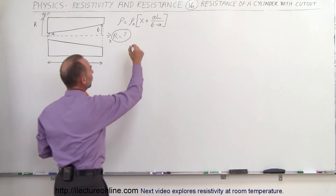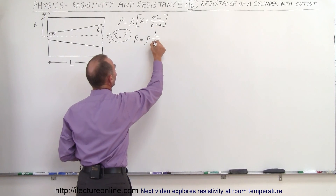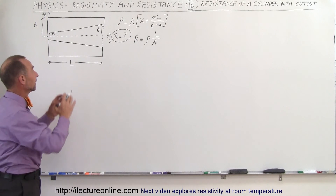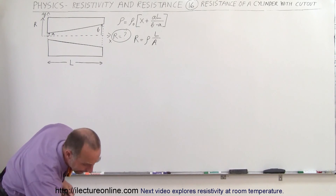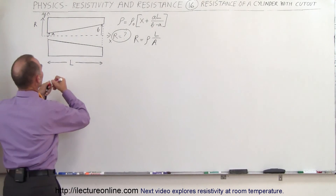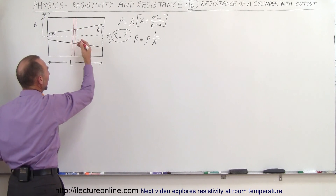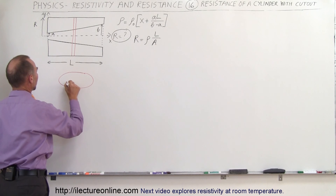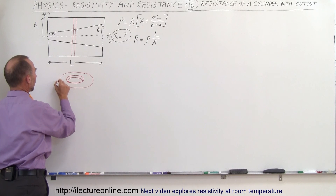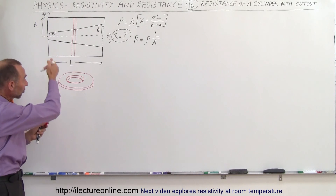We know that the resistance equals the resistivity times the path length divided by the cross-sectional area. Since both the cross-sectional area and the resistivity are changing, we want to imagine a small slice of this. If we take a little slice, the cross-sectional area of that slice would be shaped like a washer, with a thickness of DX.